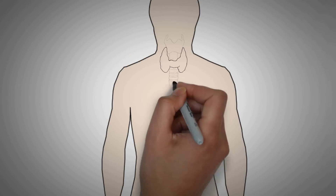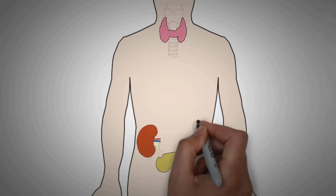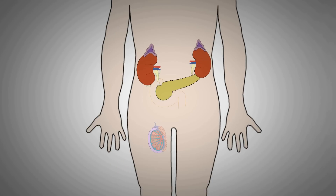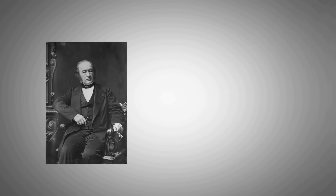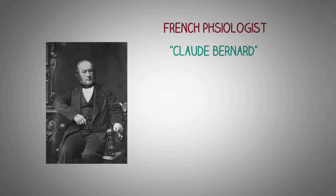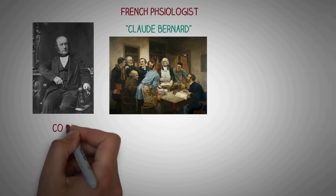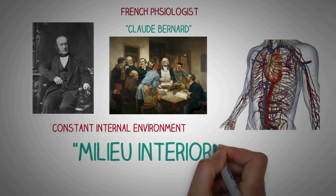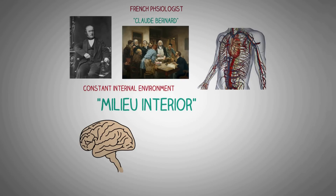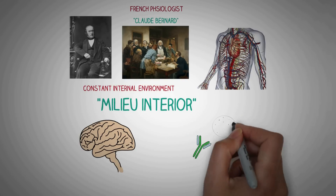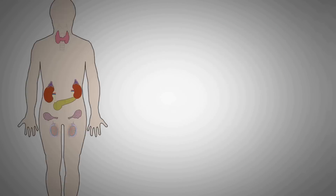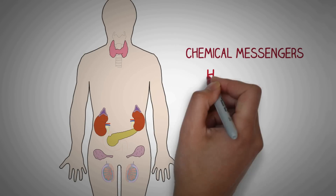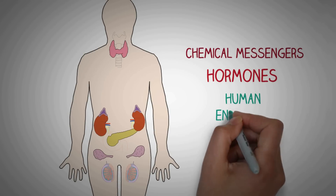The human endocrine system consists of a number of glands located all over the body that secrete hormones and regulate various functions of the body. Modern endocrinology originated in the 20th century upon the works of a French physiologist, Claude Bernard, who made a key observation that humans have a constant internal environment, which he called milieu interior, which is preserved by various systems of human physiology, including the nervous system, the immune system, and a set of glands that secrete chemical messengers known as hormones.